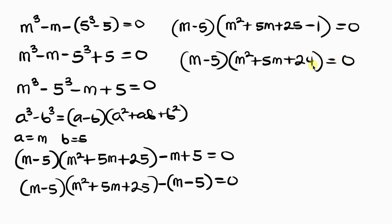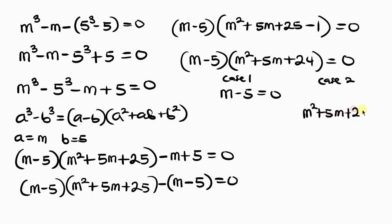We have two cases. Case 1: m minus 5 equals zero, giving m equals 5. Case 2: m squared plus 5m plus 24 equals zero, which is a quadratic. Since m must be real, we test the discriminant.